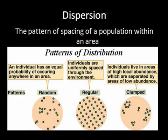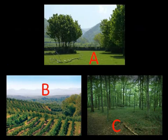Random is exactly what it sounds like — individuals can be found anywhere in the area. Regular is when individuals are uniformly spaced throughout the area. And clumped is when individuals are found in groups throughout the area. Here are three pictures of different tree populations, each exhibiting a different pattern of distribution. Identify on your paper which tree population matches each pattern of distribution.